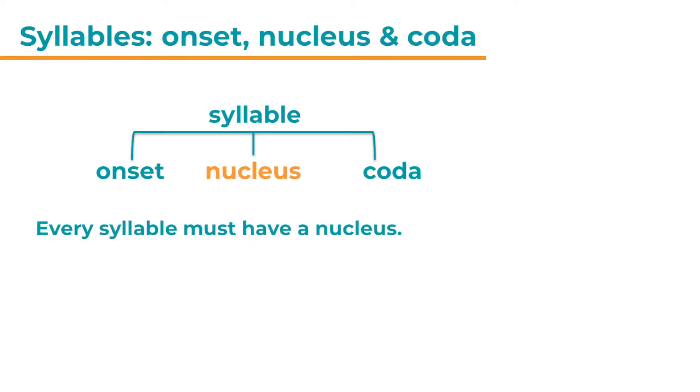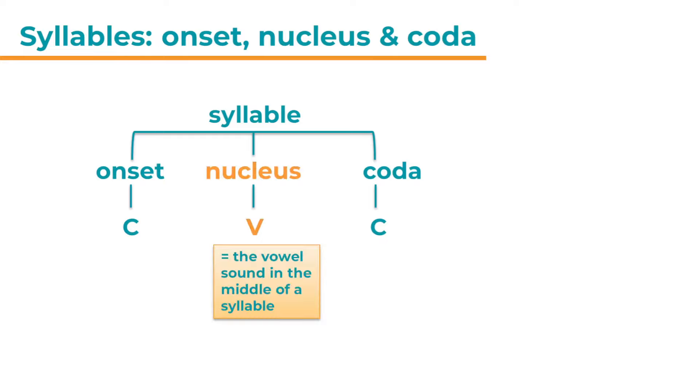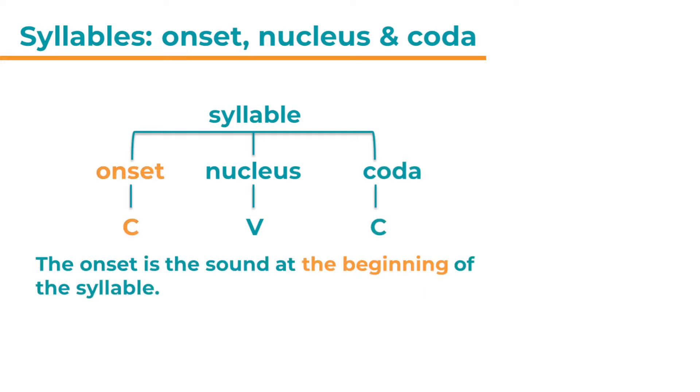Every syllable must have a nucleus. The nucleus is sometimes called the peak. Not every syllable has an onset or coda. The C here stands for consonant and the V for vowel. The nucleus is the vowel sound in the middle of a syllable. The C here is the onset and there could be one or more consonant sounds. And the coda is also one or more consonant sound. The onset is the sound at the beginning of the syllable.